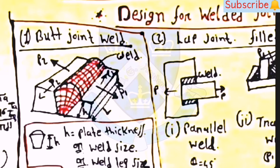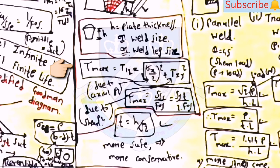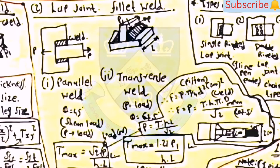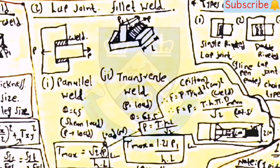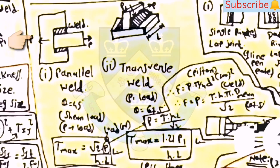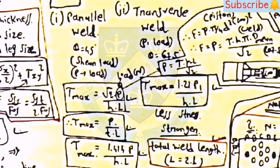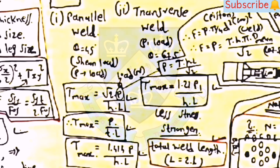Design for welded joints: for butt joint weld, tau_max = tau_12 = √[(sigma_x/2)² + tau_xy²], and tau_max = SSY/FOS = SYT/(2·FOS). Throat thickness t = h/√2. For fillet weld (lap joint), two types: parallel weld and transverse weld. Angle in parallel weld is 45° and in transverse weld theta = 67.5°. For parallel weld: tau_max = (√2·P)/(h·L) = P/(t·L) = 1.414·P/(h·L). Total weld length L = 2l. Parallel weld is weaker than transverse weld, so design is always based on parallel weld.